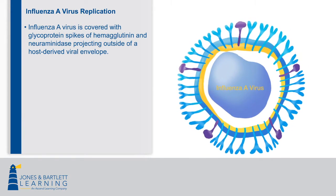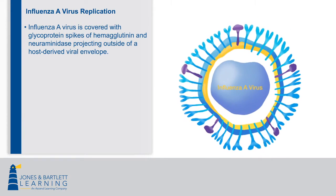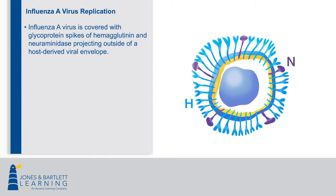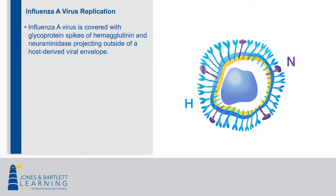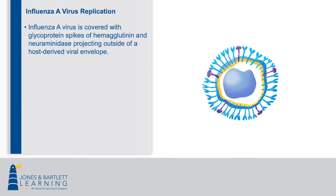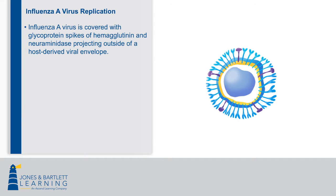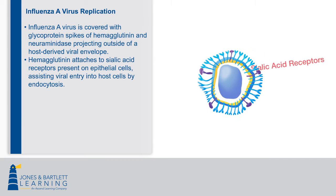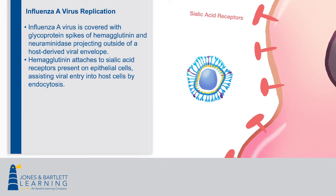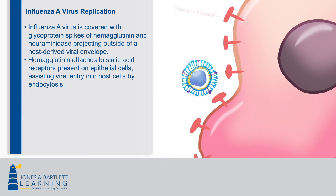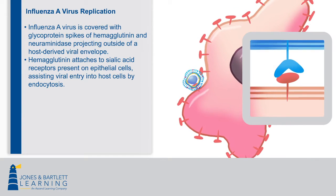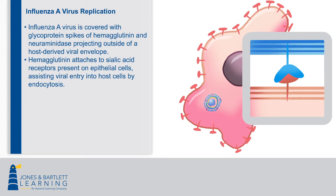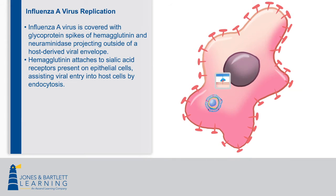Influenza A virus is an enveloped virus that is covered with glycoprotein spikes of hemagglutinin and neuraminidase projecting outside of the host-derived viral envelope. Hemagglutinin attaches to sialic acid receptors present on epithelial cells that line the sinuses and airways, assisting viral entry into host cells by endocytosis.